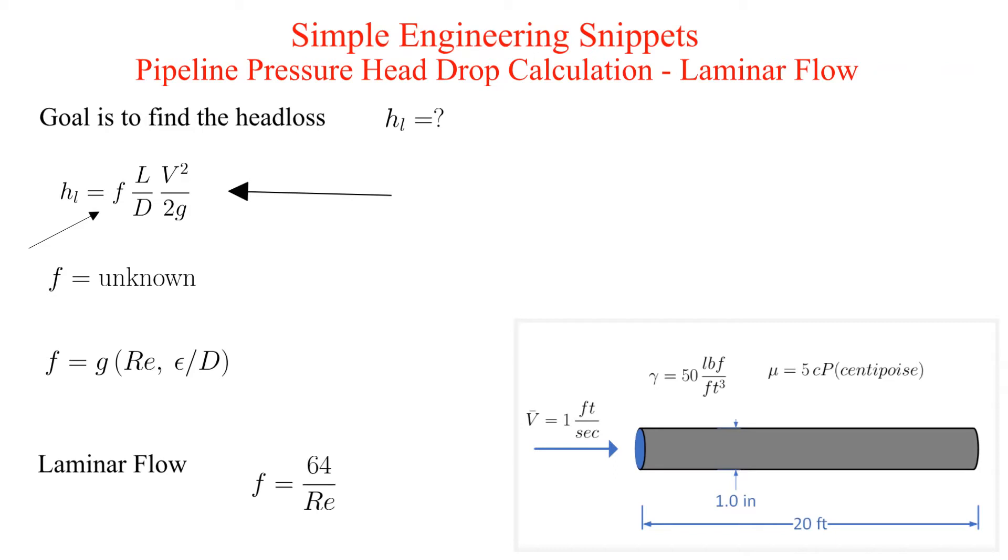Similar expressions can be derived for other geometries, i.e. rectangular ducts, but in general they will have a different constant, i.e. not 64. Once we confirm laminar flow we can use this approach.